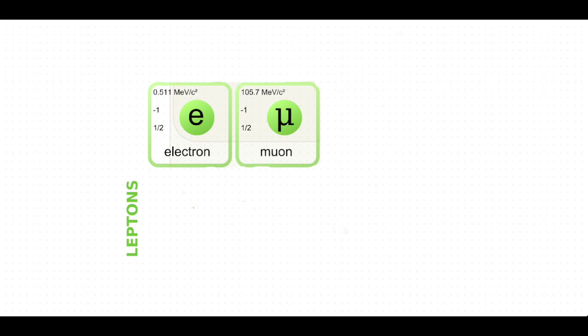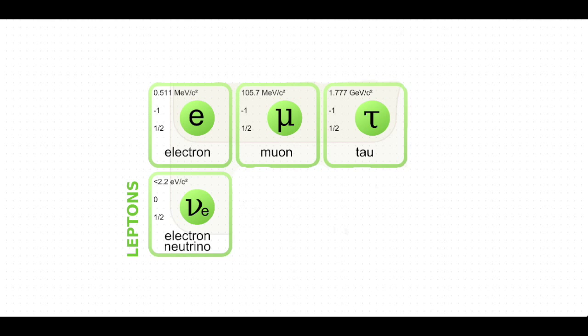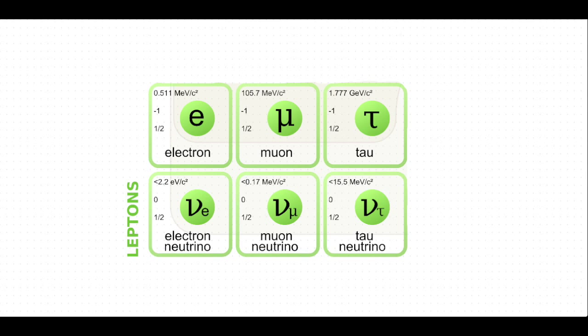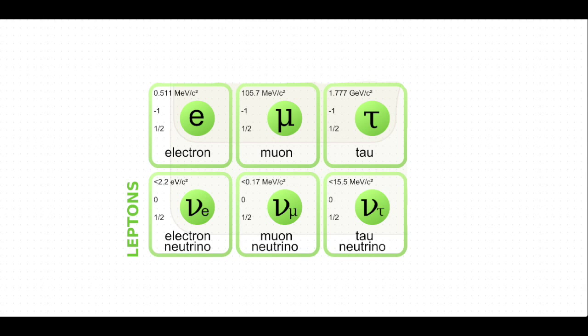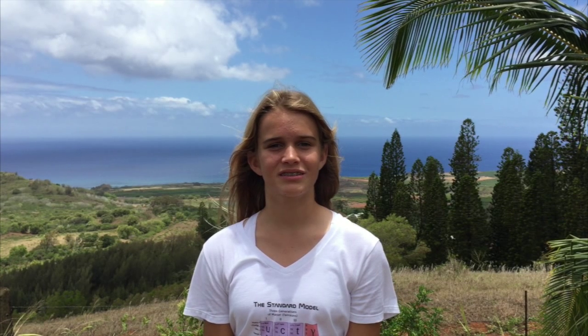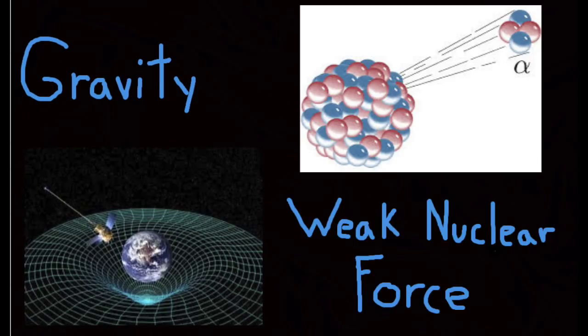There are six types of leptons: electrons, muons, taus, electron neutrinos, muon neutrinos, and tau neutrinos. Leptons are any elementary particle that interacts with the weak force. The first lepton to be discovered, and perhaps the most well-known lepton, is the electron. This particle can be found orbiting the atomic nuclei of our atoms. The latest leptons to be discovered are the neutrinos. Neutrinos are nicknamed the ghost particles because it took scientists over 40 years to find them, since they interact so weakly with other particles.